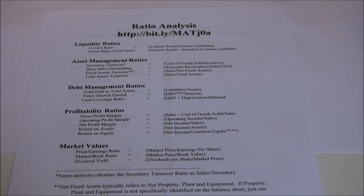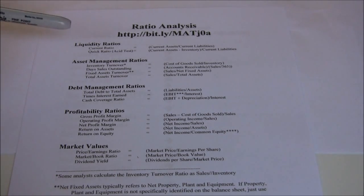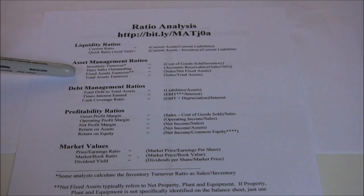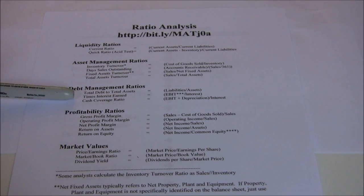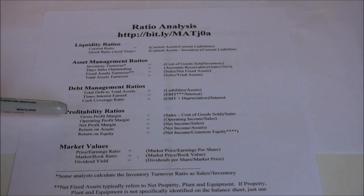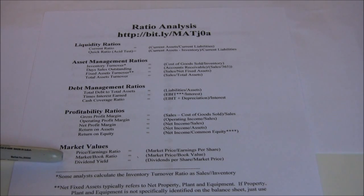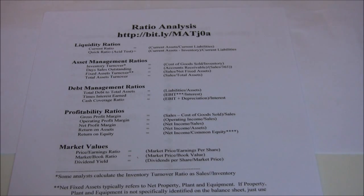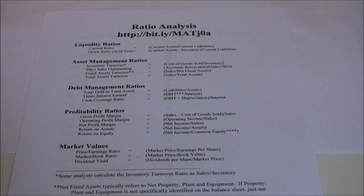We've got the ratios segmented into five separate categories: liquidity ratios, asset management ratios, debt management ratios, profitability ratios, and market value ratios. Each of these categories is designed to give us a different perspective on different aspects of the firm.